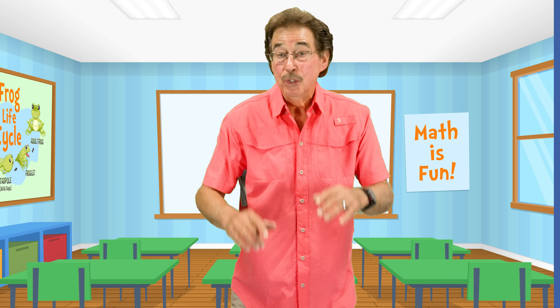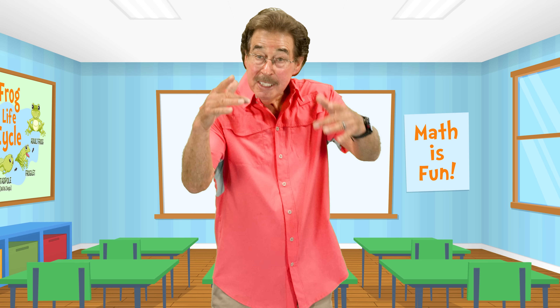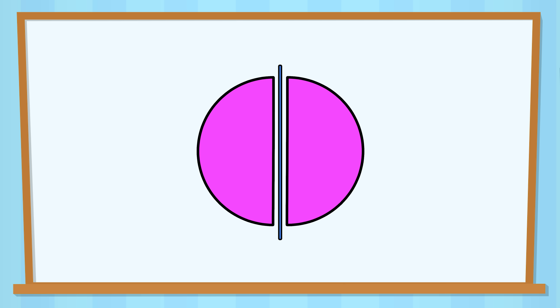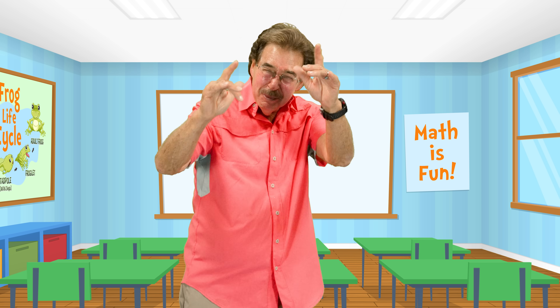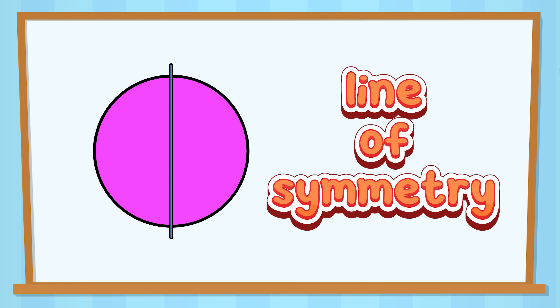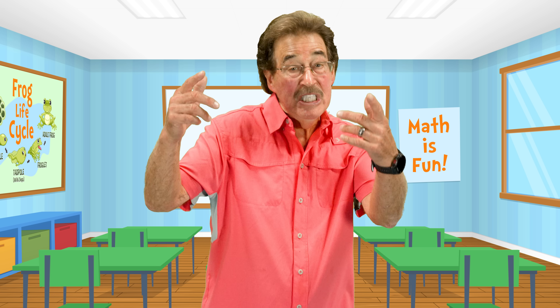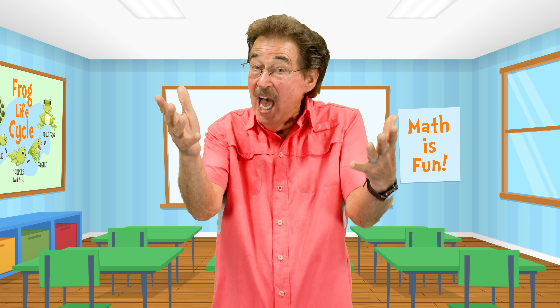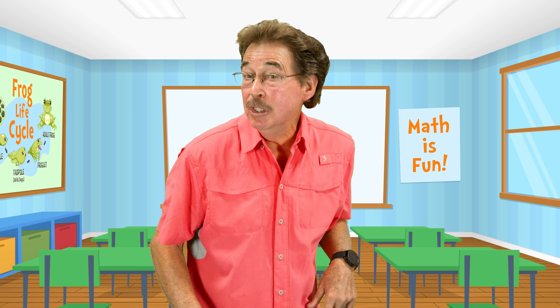Symmetry! Symmetry is when an object looks the same on both sides. The line down the middle is a symmetry line. Each side matches perfectly, each side of the line of symmetry.